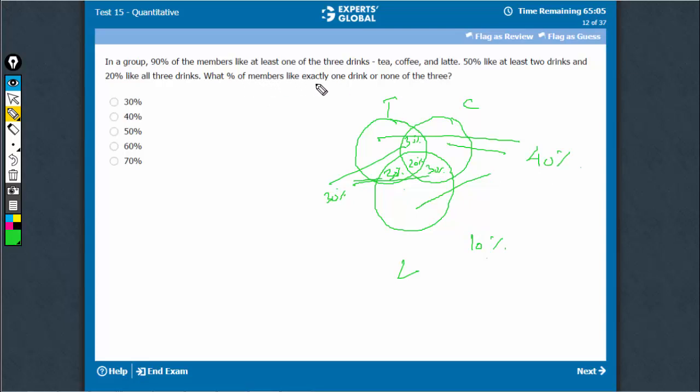what percentage of members like exactly one or none? So 40% plus 10%, the answer has to be 50%.